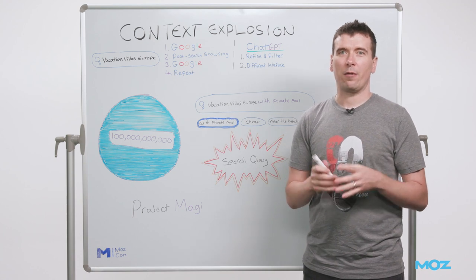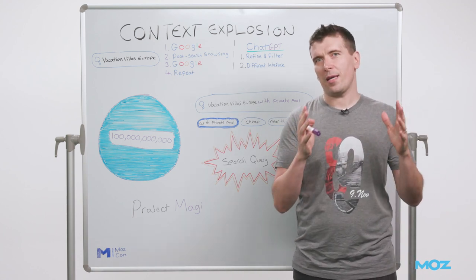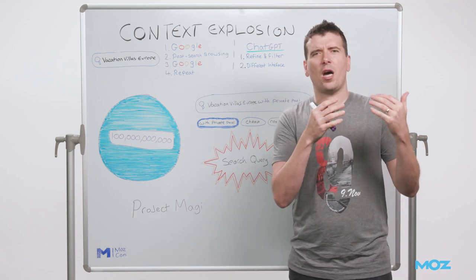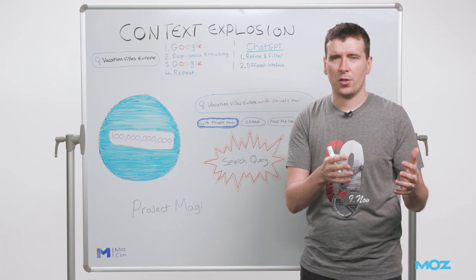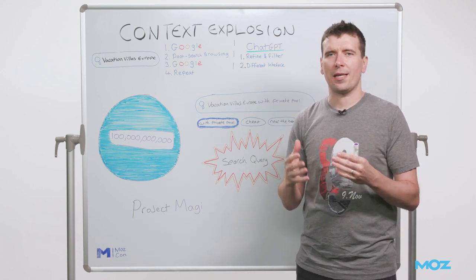When we talk about context within the frame of reference of SEO or search, we're typically talking about either implicit context, which describes the searcher, their time of day, their location, their language, or we're talking about explicit context, which is the search query itself.